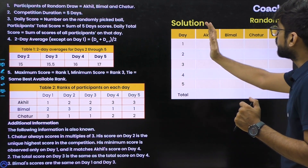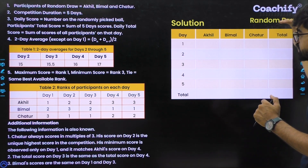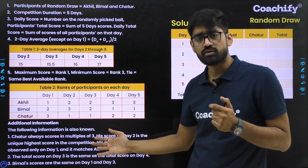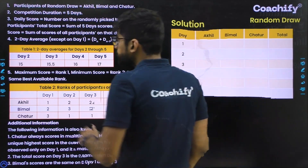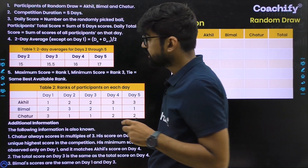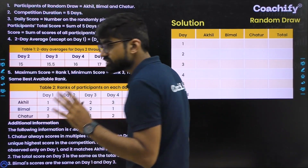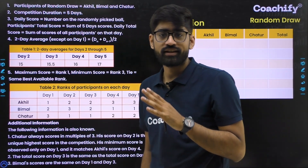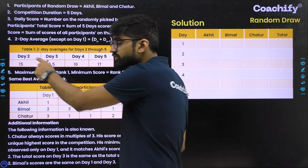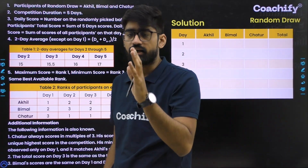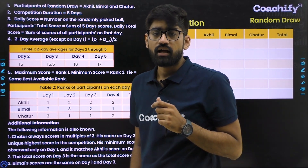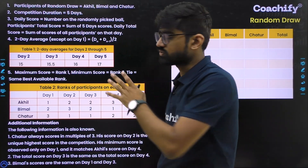We have to fill in scores for each of the 5 days and calculate the total. For that, we are provided with some additional information. We are given two tables. One is 2-day averages for days 2 through 5. The 2-day average for day 2 means the average of total scores for day 1 and day 2 — so twice that value gives the sum of day 1 and day 2 totals. Likewise, the 2-day average for day 3 is the average of total scores for day 2 and day 3, and so on.